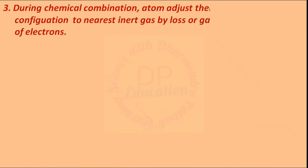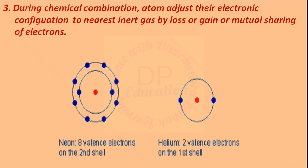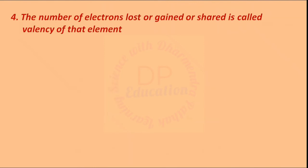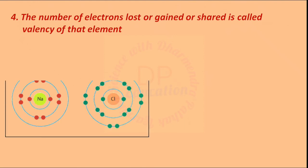During chemical combination, atoms adjust their electronic configuration to that of the nearest inert gas by loss, gain, or mutual sharing of electrons, and try to complete their duplet or octet state. The number of electrons lost, gained, or shared is called the valency of that element.